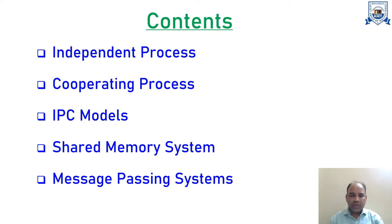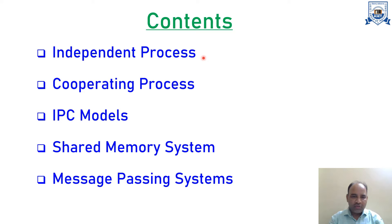Hello everyone, welcome to the class on IPC models and schemes. In this particular lecture I will be covering the different inter-process communication models and different schemes to implement them. We are going to cover the different kinds of processes — independent and cooperating — and then we will discuss the inter-process communication models, which are basically of two types: shared memory system and message passing system.